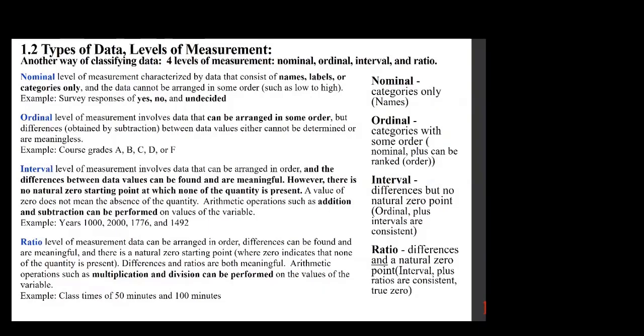Interval level of measurement involves data that can be arranged in order, and the differences between data values can be found and are meaningful. However, there is no natural zero starting point at which none of the quantity is present. A value of zero does not mean the absence of the quantity. Arithmetic operations such as addition and subtraction can be performed on values of the variable. Example: years 1000, 2000, 1776, and 1492.